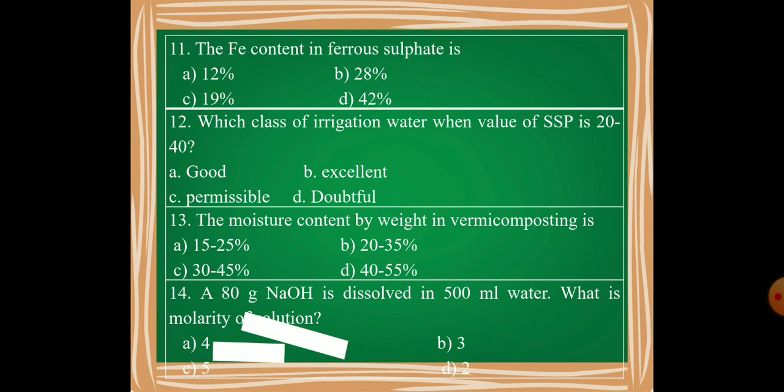Whether it is good, excellent, permissible, or doubtful? Then the thirteenth question is: The moisture content by weight in vermicompost is 15-25%, 20-35%, 30-45%, or 40-55%?